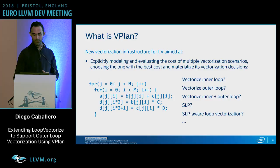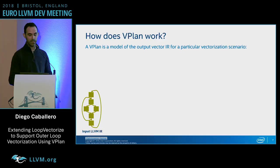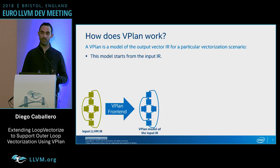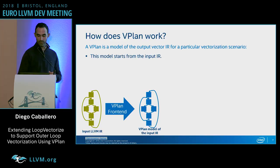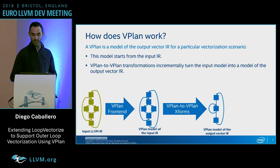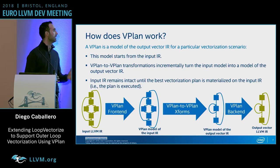How does it work? vPlan is a model of the output vector IR for a particular vectorization scenario. We send the input LLVM IR to vPlan, model the input IR, and then apply a sequence of vPlan-to-vPlan transformations that turn the model of the input IR into the model of the vector output IR. If this vectorization has the best cost, we materialize the vectorization decisions on the input LLVM IR. The key point is that the input IR remains intact until we decide to execute the best plan.